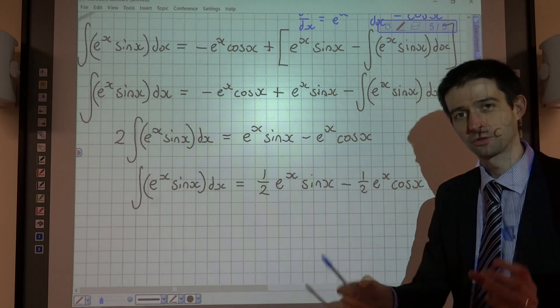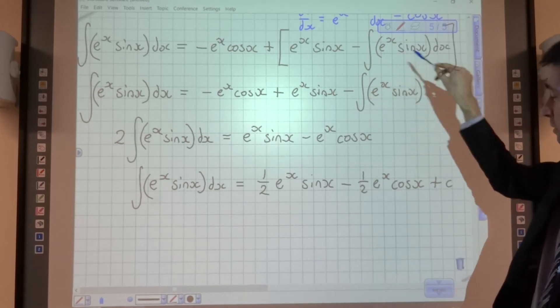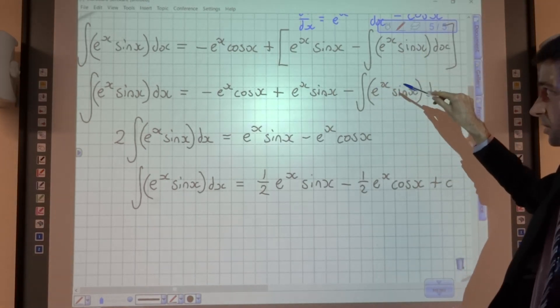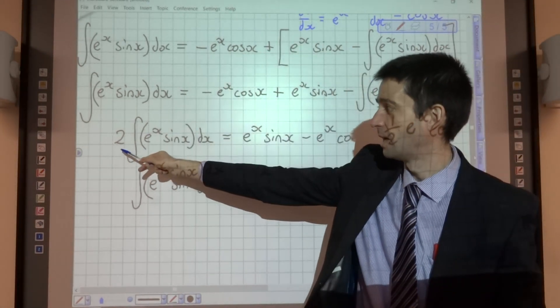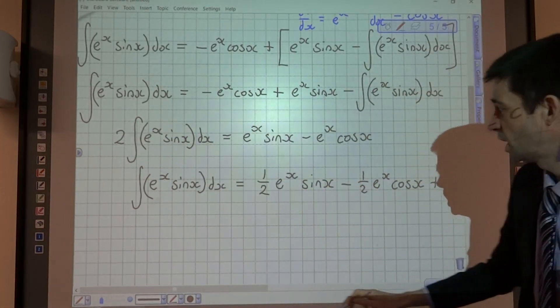So sometimes you get these integrals where you can do them by parts and it looks as though they're looping, but actually you can use the fact that you get the same integral the second time you do parts to have a number of that integral and then divide by that number.